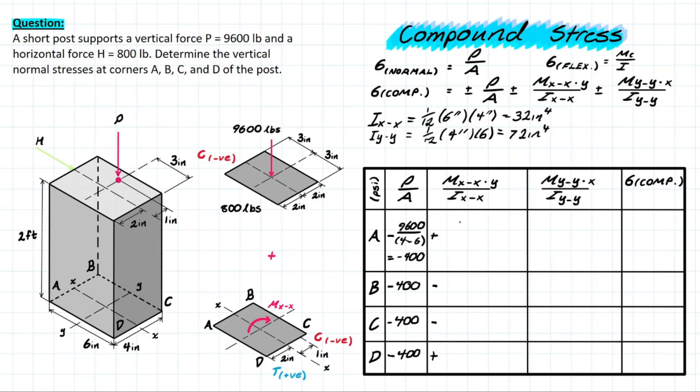Now for the moment xx we can now solve for that value so mxx is going to be based on the eccentricity from that axis of reference the x-axis and it's going to be acting about x right so we have an eccentricity from the x-axis of one inch meaning that we have 9600 pounds times the one inch force times distance leaving us once again with 9600 pounds per inch.